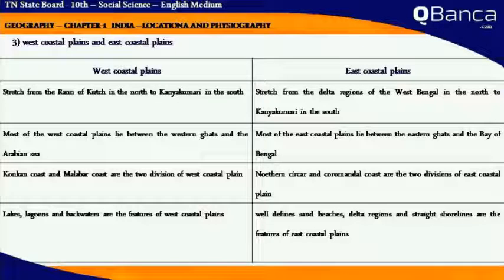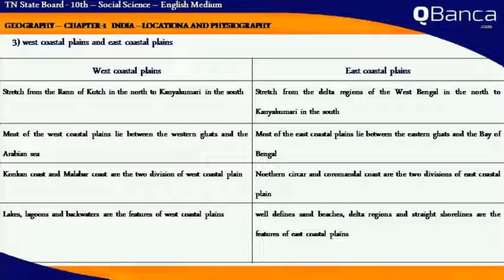The Konkan Coast and Malabar Coast are the two divisions of West Coastal Plains, whereas the Northern Sarkar and Coromandel Coast are the two divisions of East Coastal Plains. Lakes, lagoons, and backwaters are the features of West Coastal Plains, whereas sand beaches, deltaic regions, and straight shorelines are the features of East Coastal Plains.